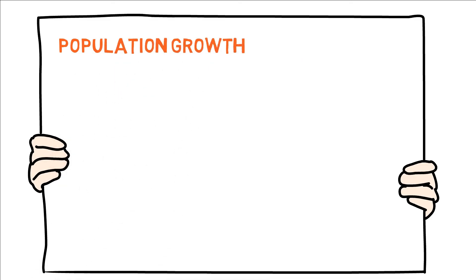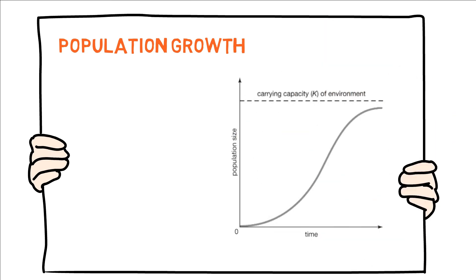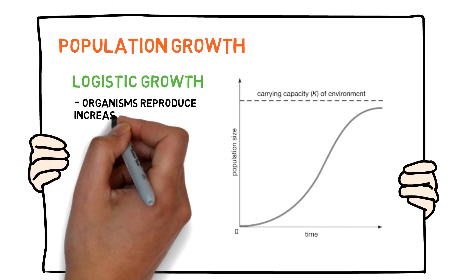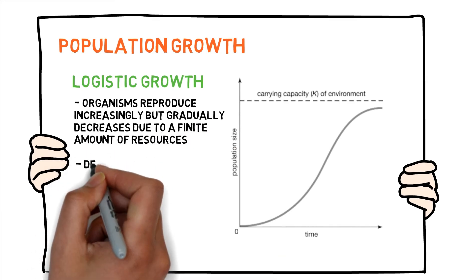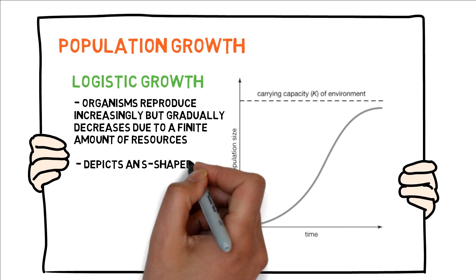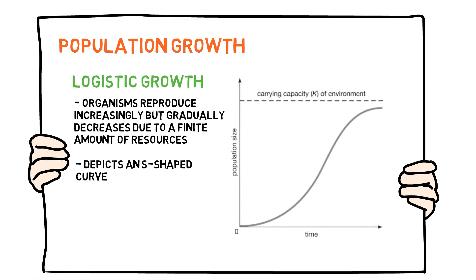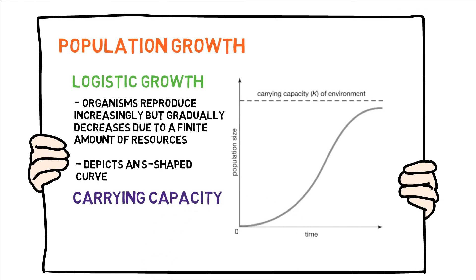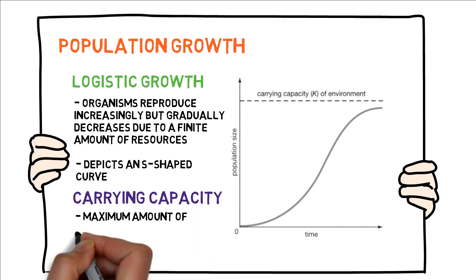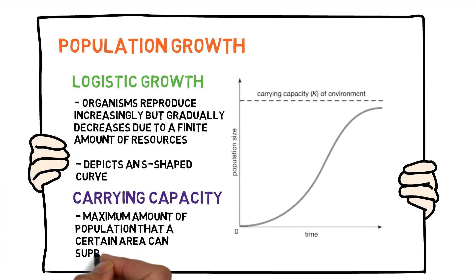On the other hand, we also have what we call a logistic growth. In logistic growth, organisms reproduce increasingly but gradually decreases due to a finite amount of resources. Unlike exponential growth, logistic growth depicts an S-shaped curve. And you can see on top that there is a broken line which shows the carrying capacity of an environment. The carrying capacity is the maximum amount of population that a certain area can support. Comparing the two growth models, we can say that the logistic growth model is more realistic because resources would be limited causing the gradual decrease in population.